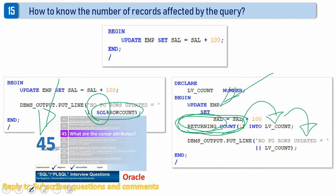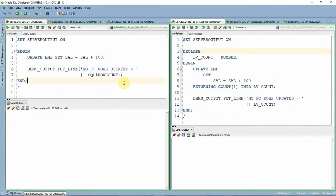The RETURNING clause will return the number of records affected by the update statement. I will now show you both methods for all five examples, because there are a few restrictions in using the RETURNING clause. SQL%ROWCOUNT is applicable for all examples since it is just an implicit cursor attribute, whereas the RETURNING clause can only be used for DML and has some restrictions we will see now. For each example, the left side of the screen uses the cursor attribute and the right side uses the RETURNING clause.